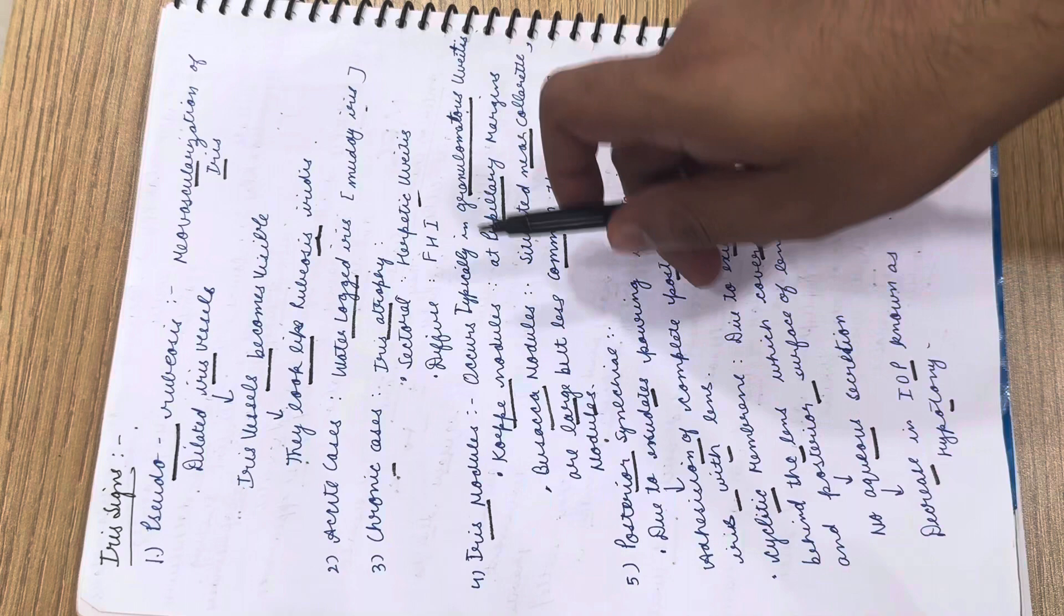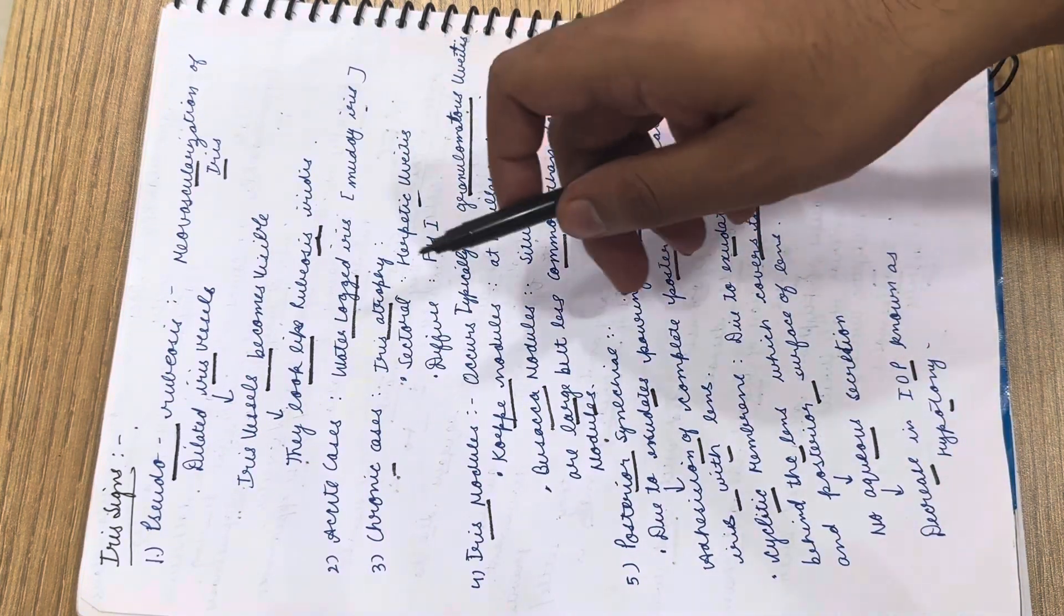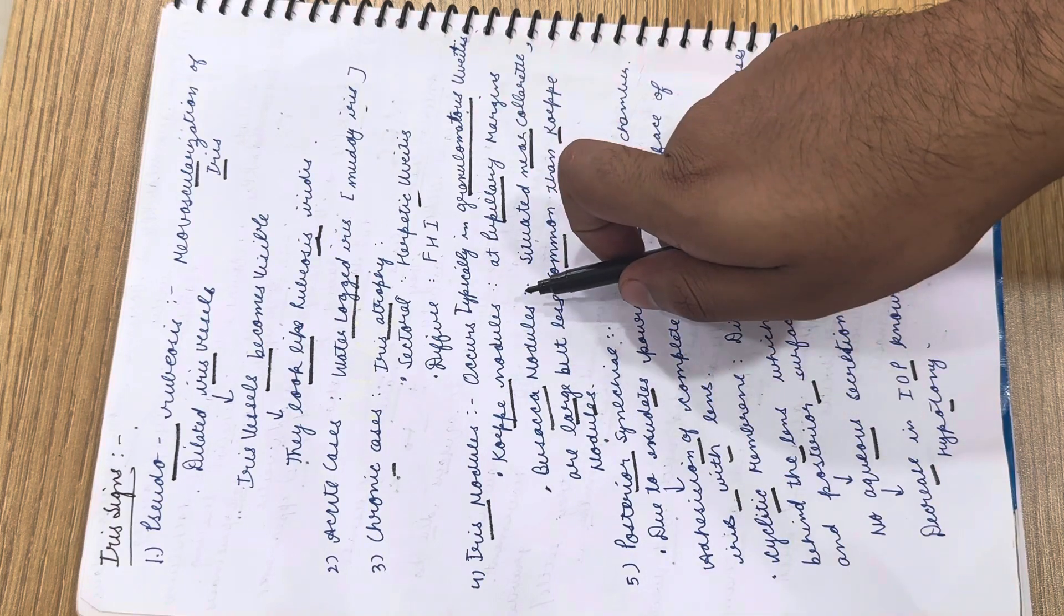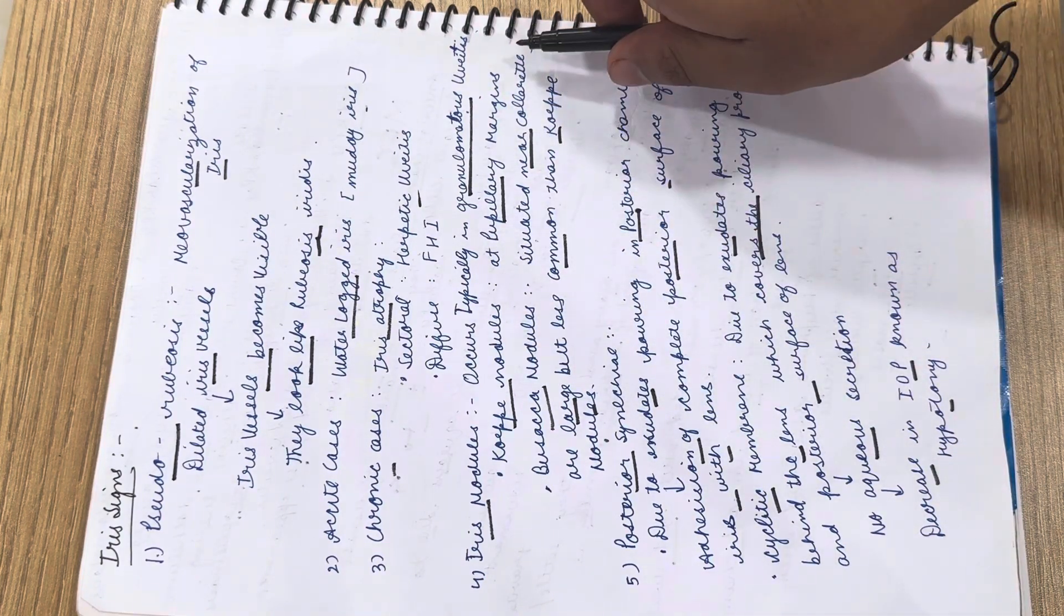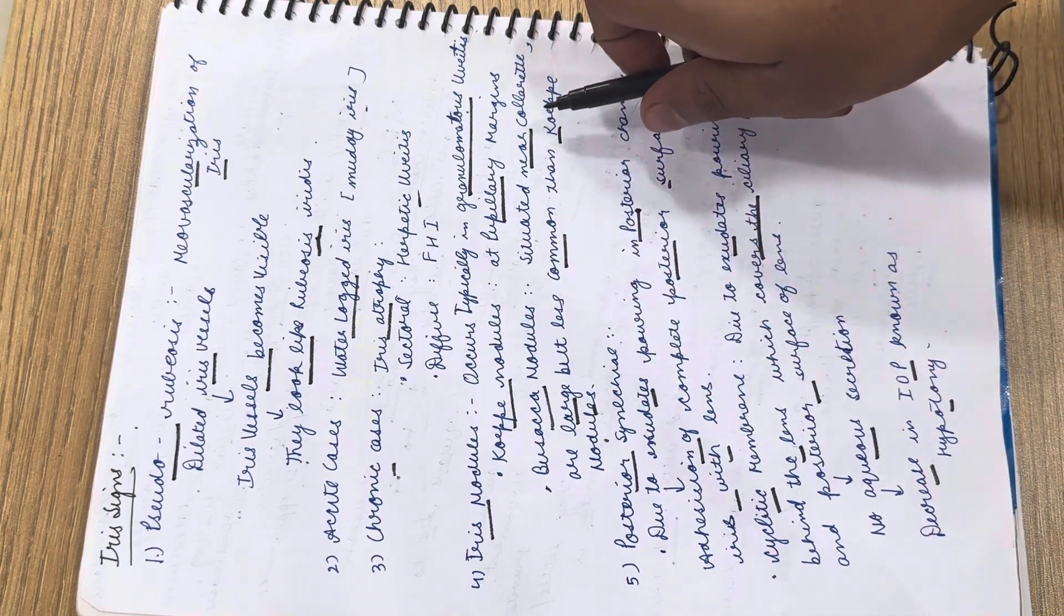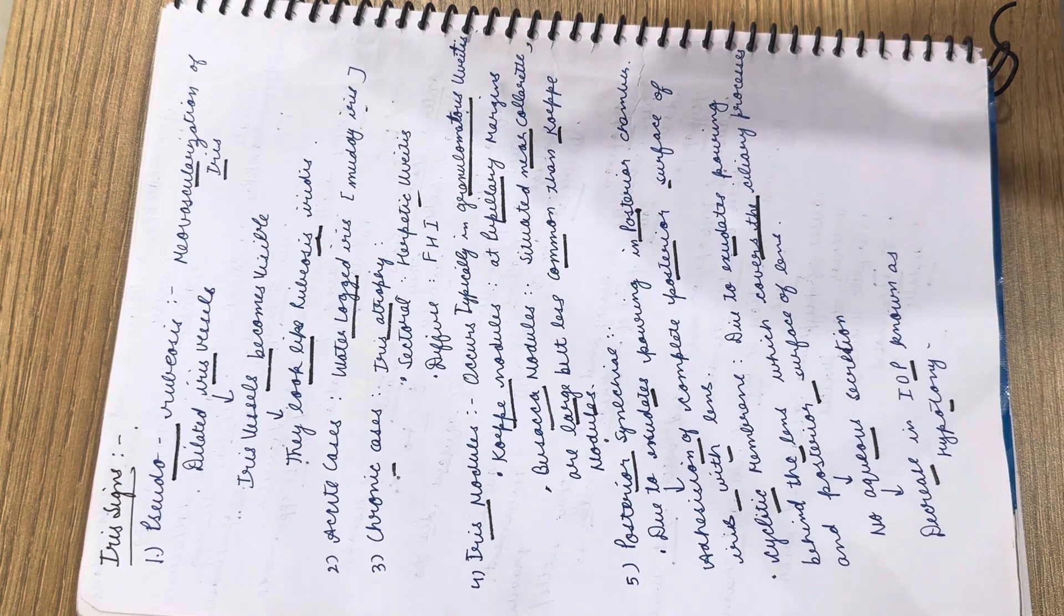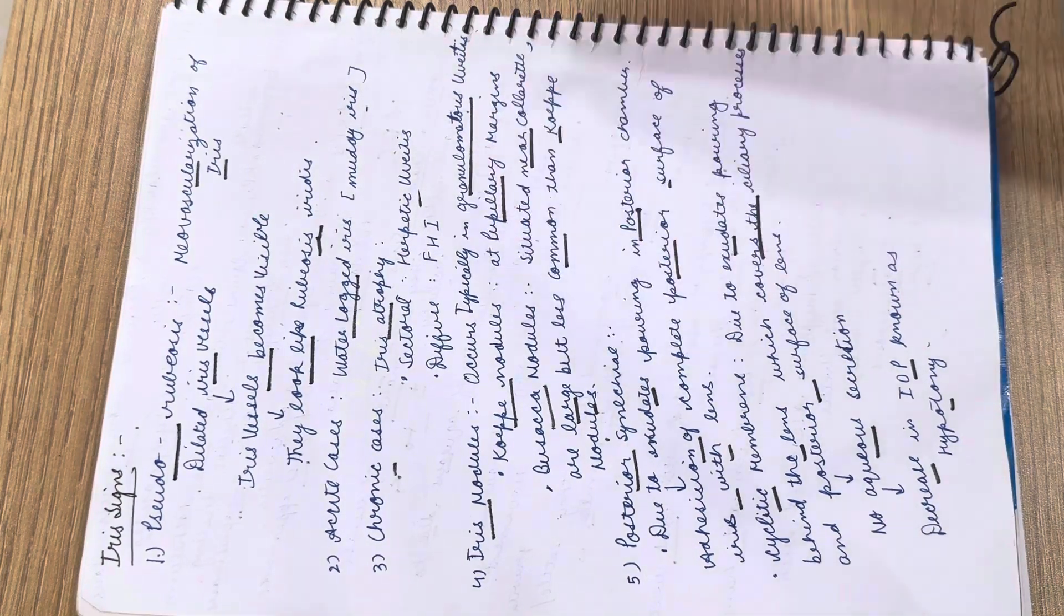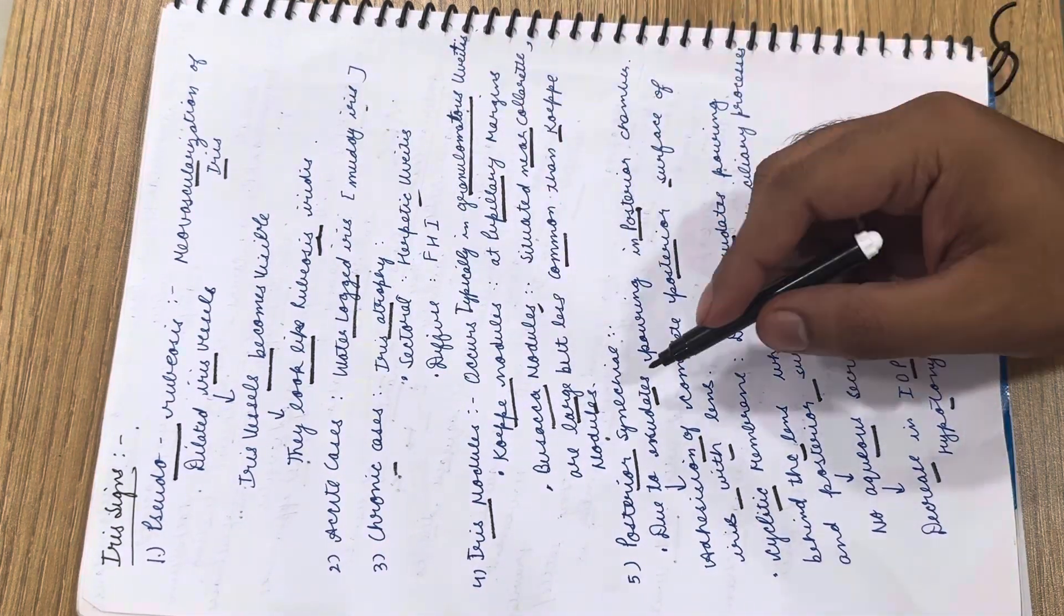Iris nodules occur typically in granulomatous uveitis. There are two types: Koeppe nodules and Busacca nodules. Koeppe nodules are found at the pupillary margin. Busacca nodules are situated near the collarette and are larger than Koeppe nodules but less common.